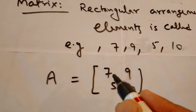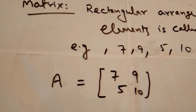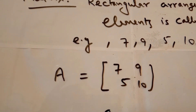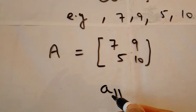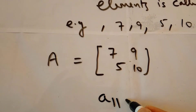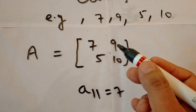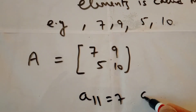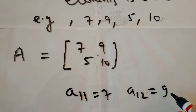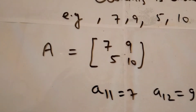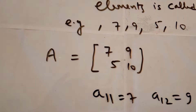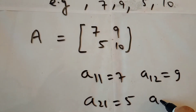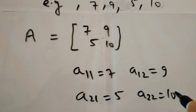What is the position of roll number one? Suppose roll number one's name is seven. Its position is first row, first column. Elements are always represented by small letters, so a₁₁ stands for the element in the first row, first column, which equals seven. Similarly, nine is in the first row, second column. Five is in the second row, first column.